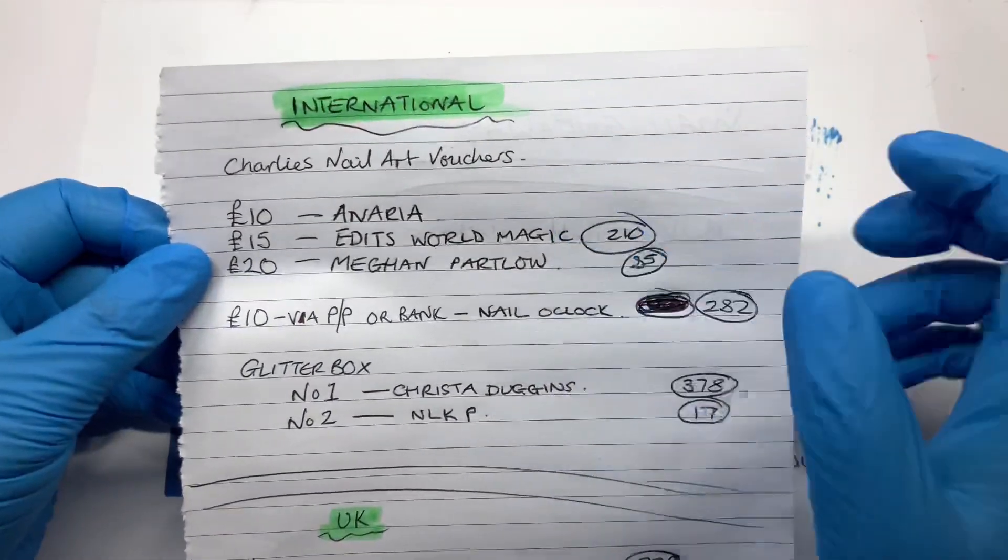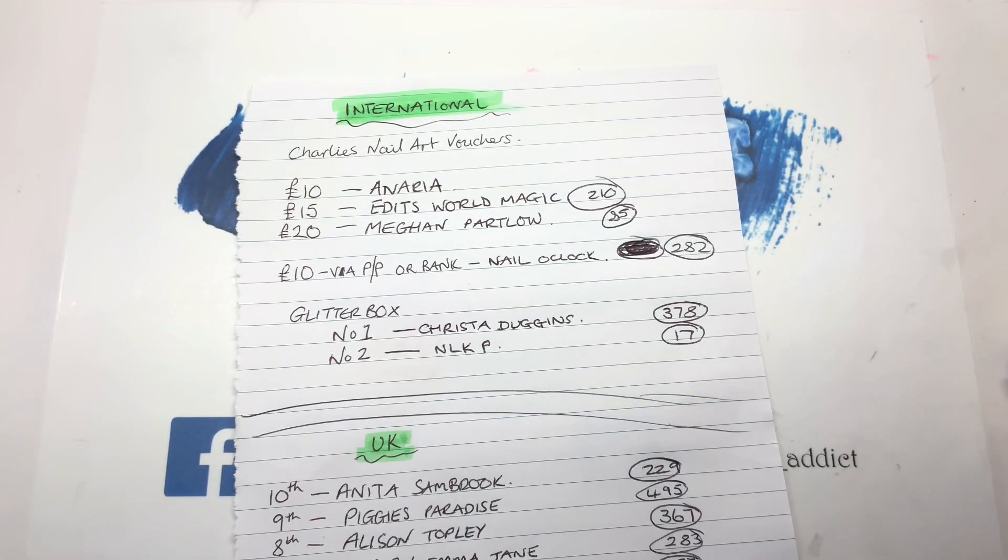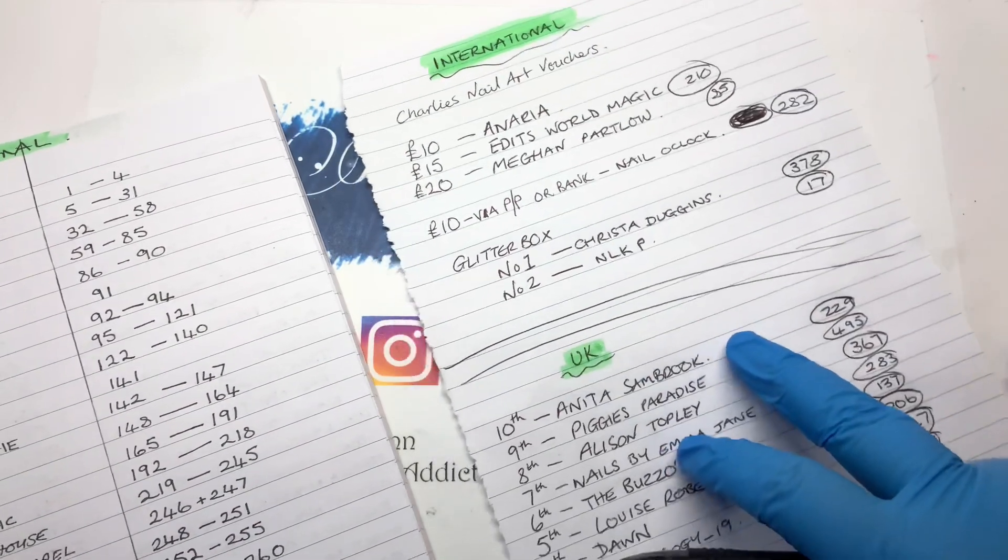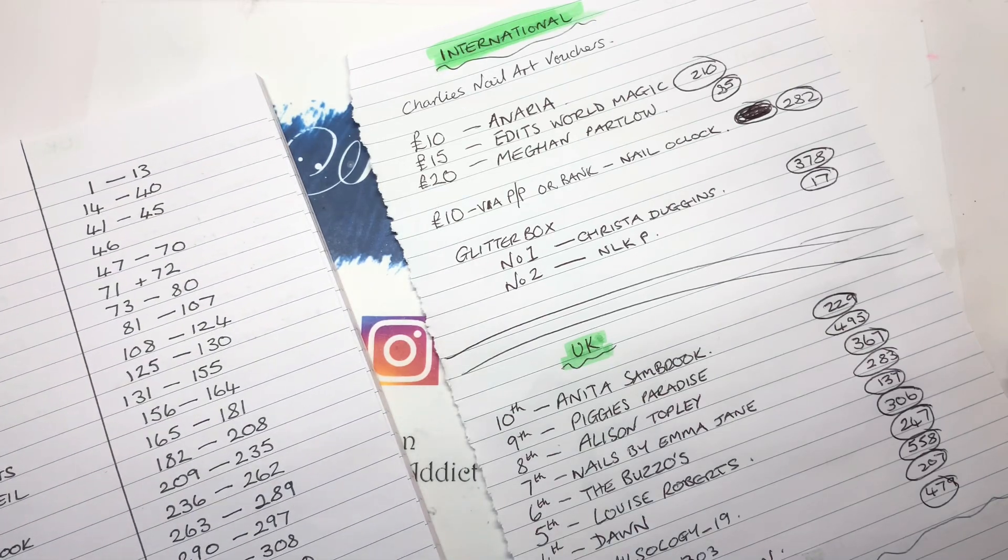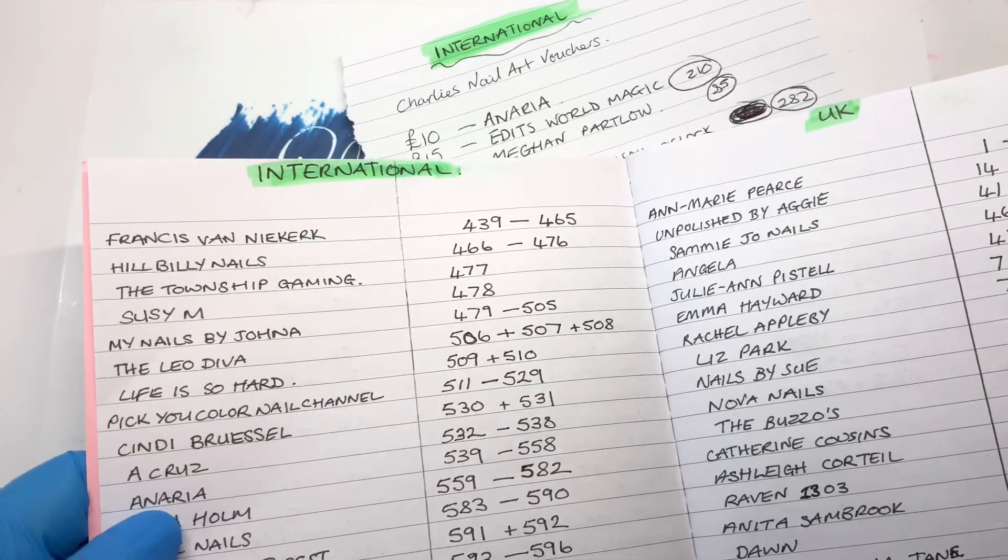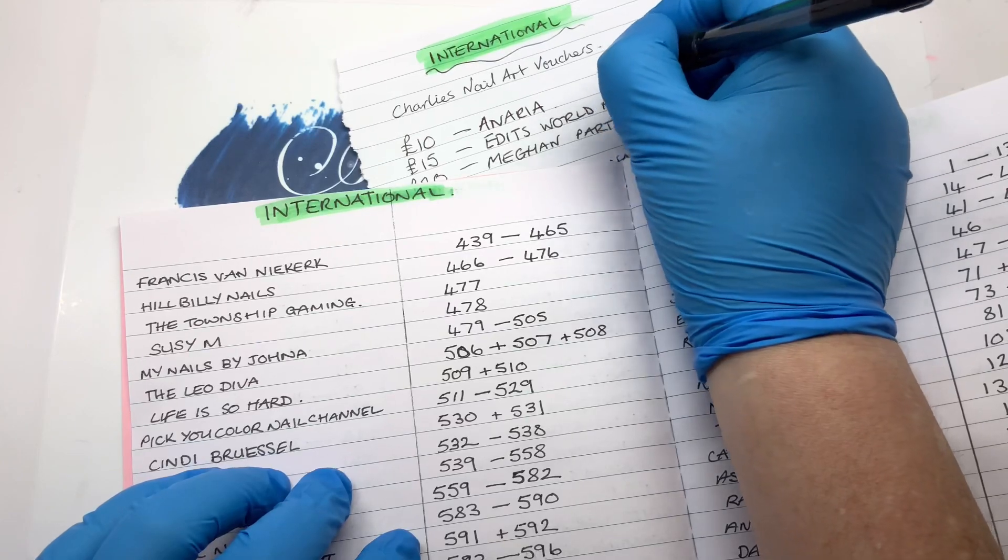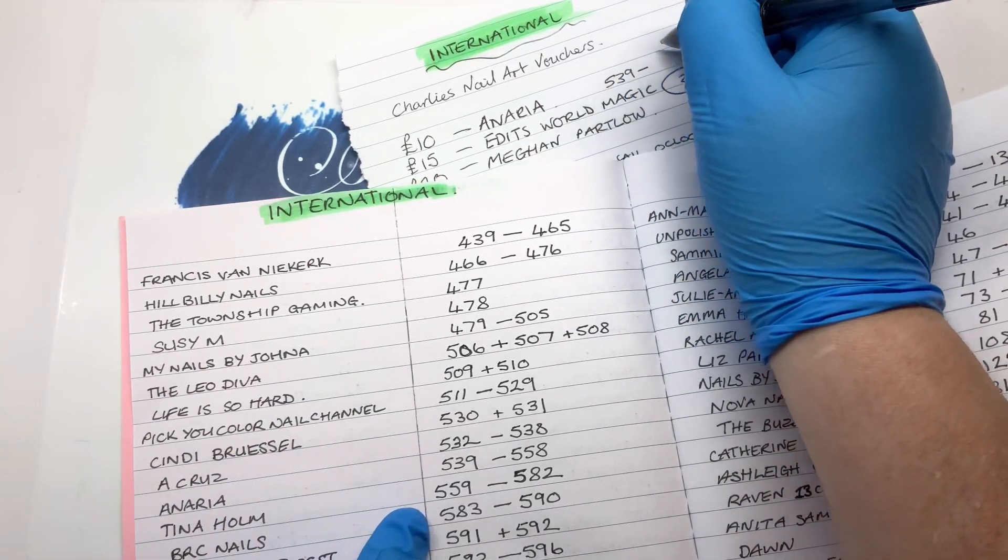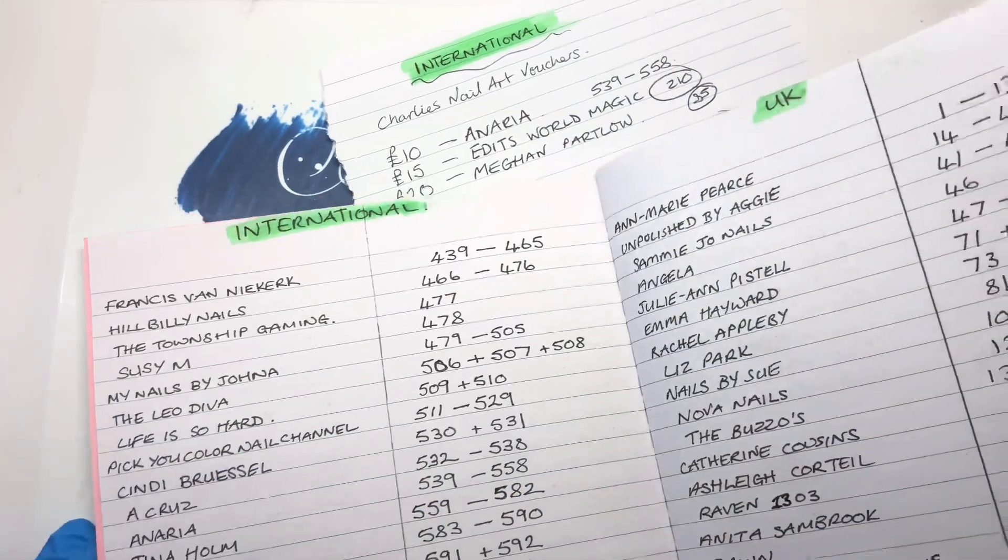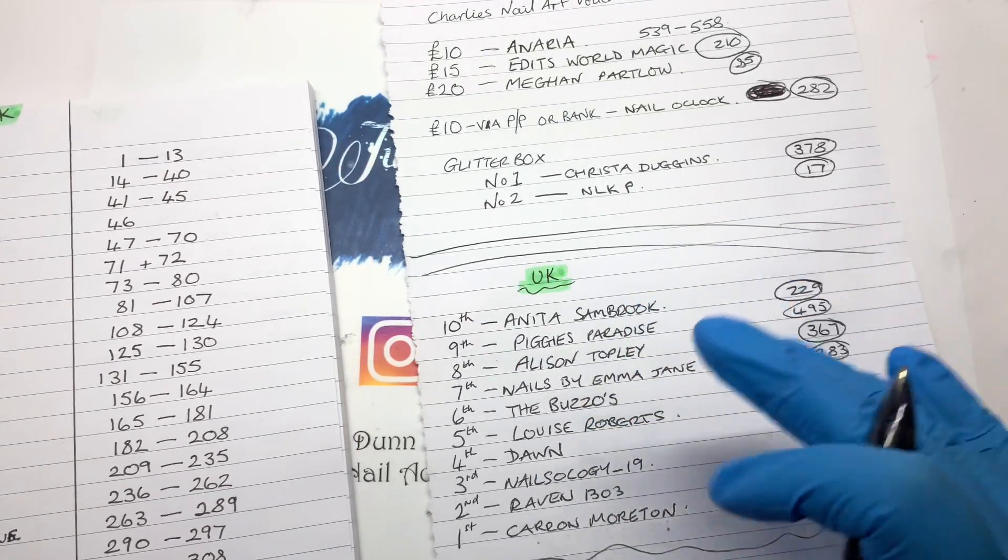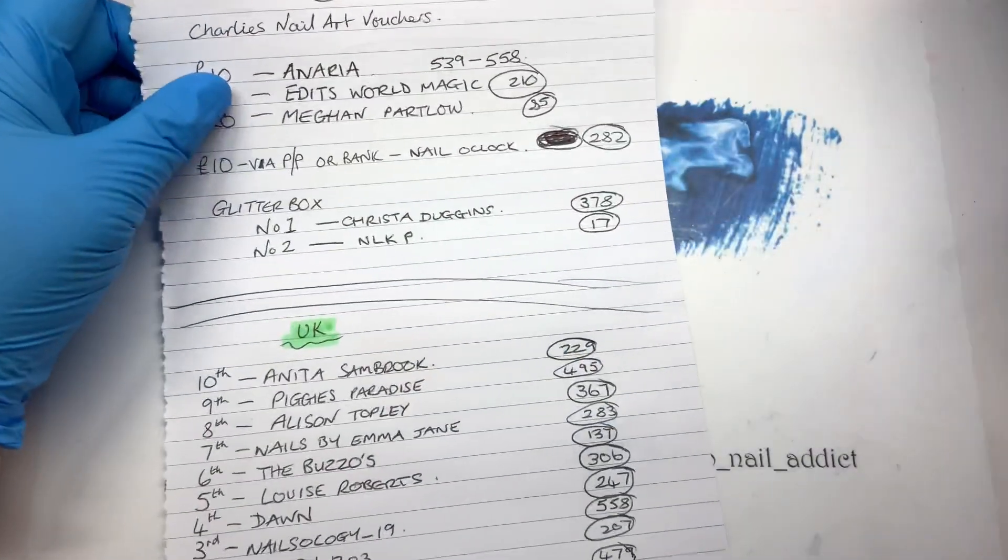I didn't write the first number down, I forgot. Let me find her in the list. Anaria was 539. So just so we know that if I have to redraw any, I can't redraw those numbers again. It'll have to be redrawn if you know what I mean.